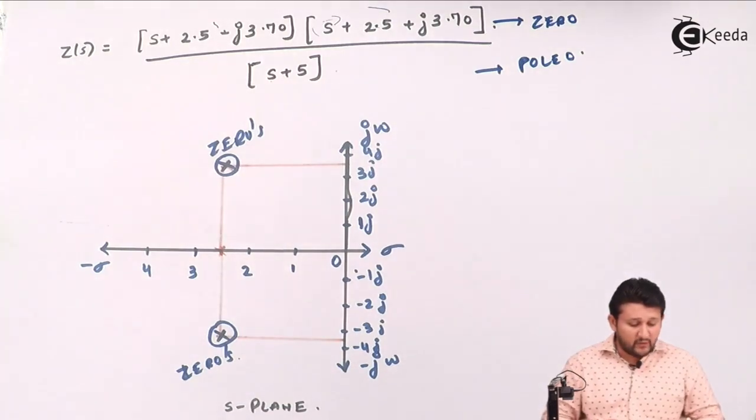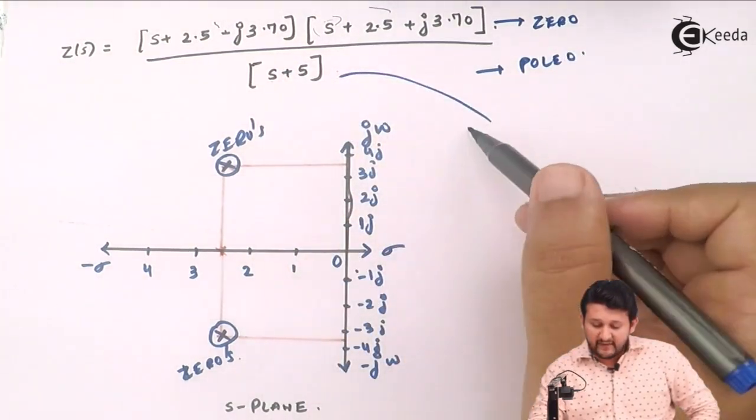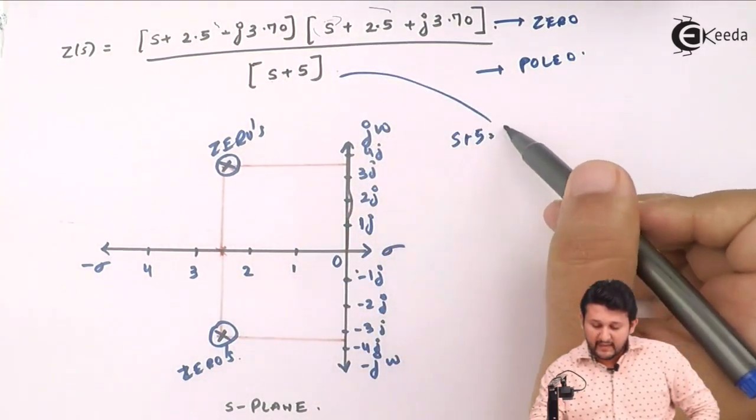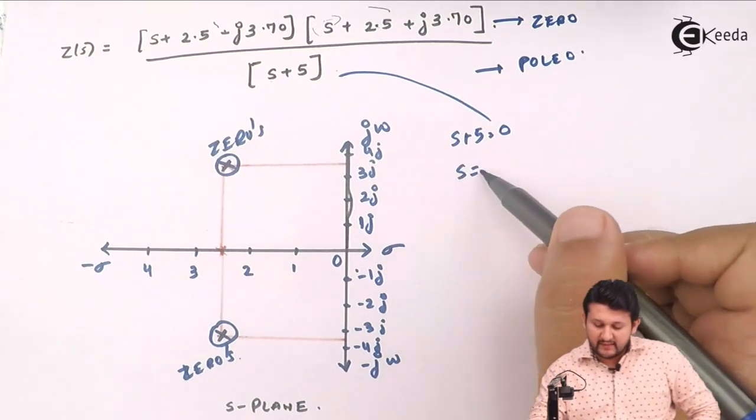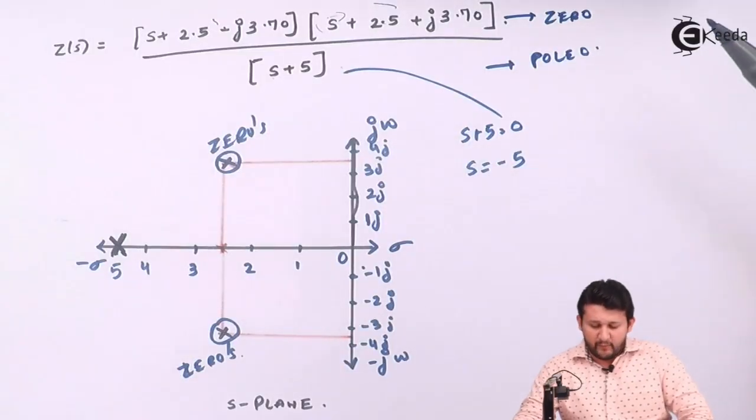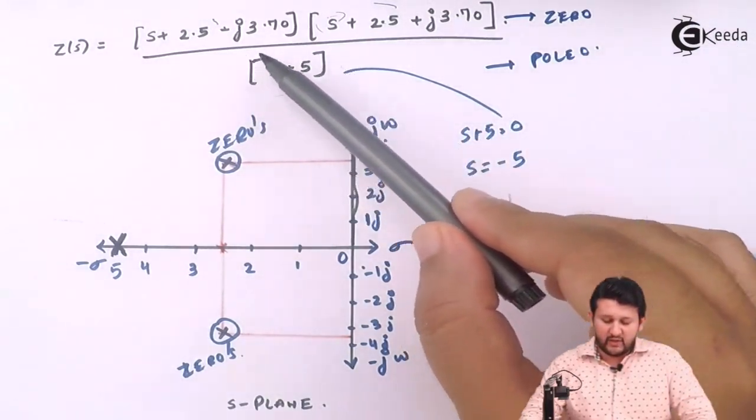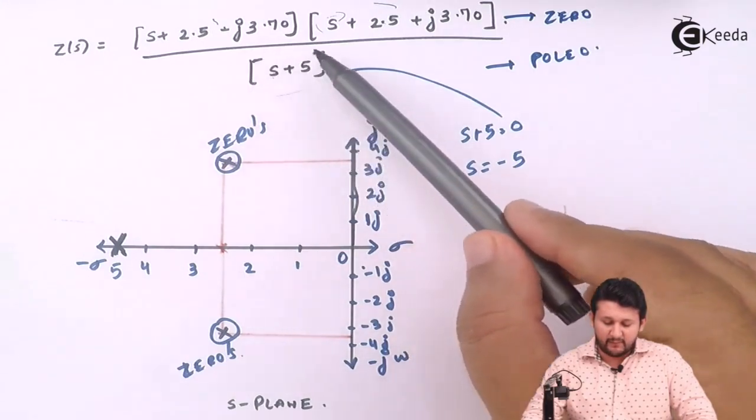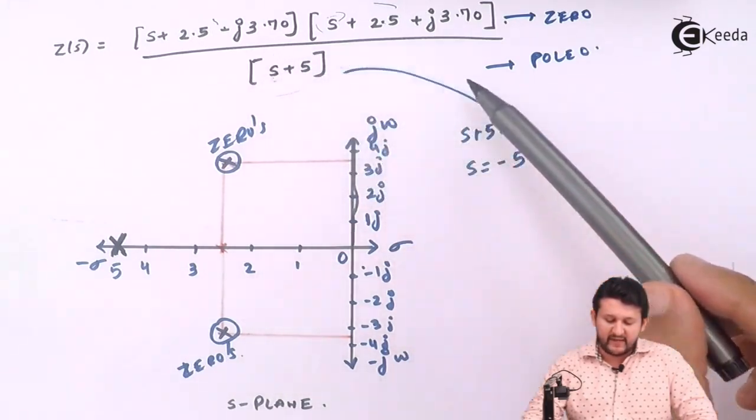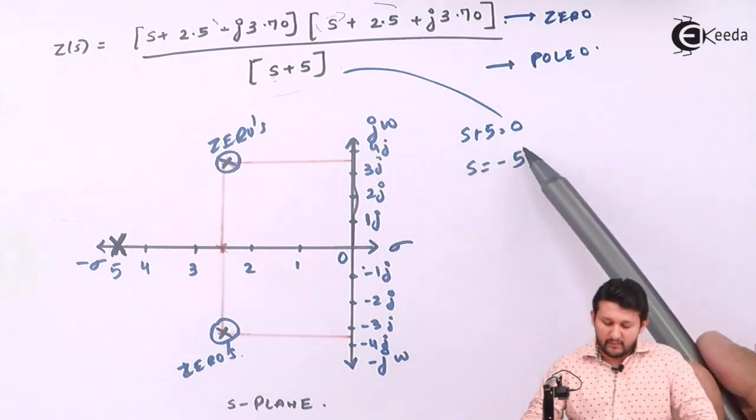Now second question says, what will be your pole? So my pole is S plus 5 equal to 0. So this is equal to minus 5. So if I need to call my pole, the pole value I will be getting from denominator. So whatever denominator bracket, put it equal to 0. S plus 5 equal to 0, so S equal to minus 5. So plot this value.